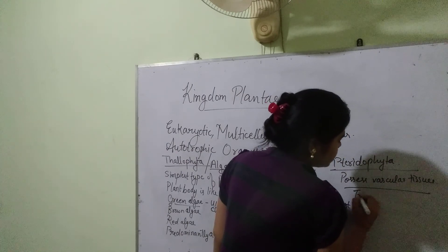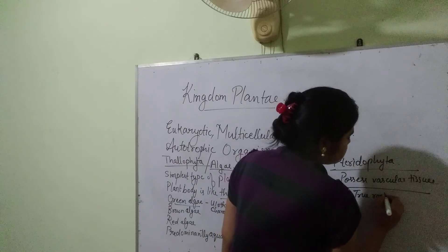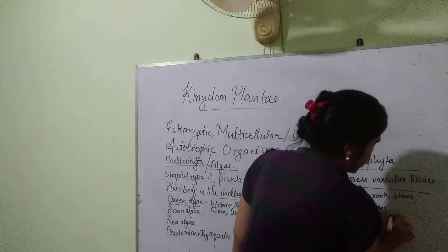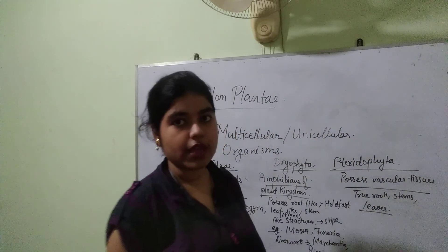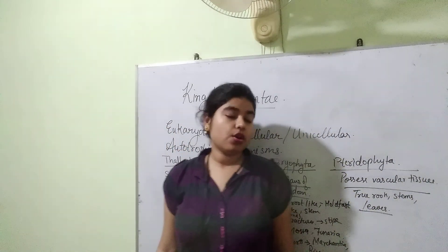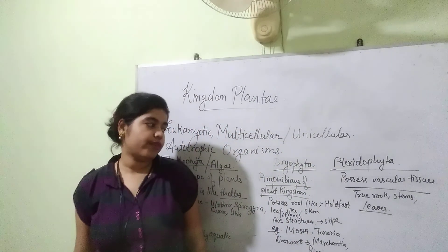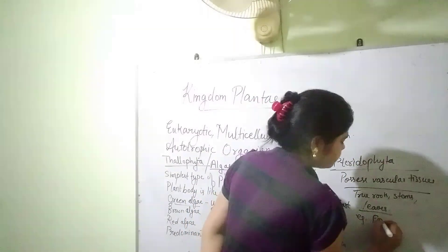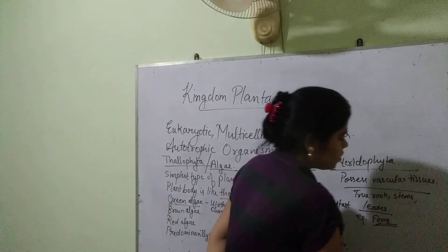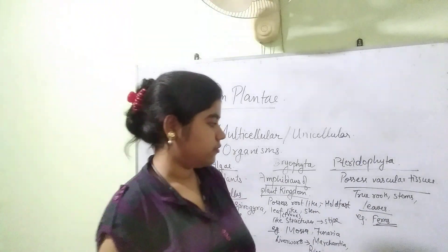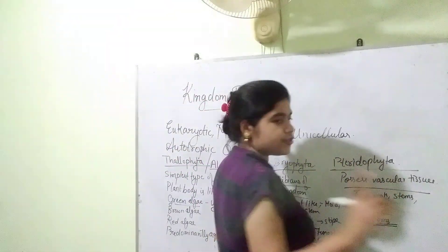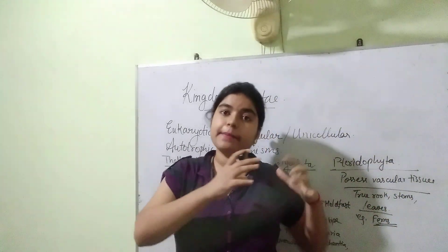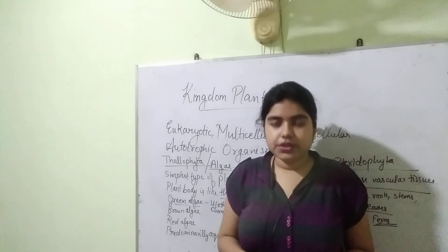Pteridophytes have true roots, stems, and leaves. Examples include ferns. Marsilea, which is also given in the NCERT, is a type of aquatic fern.